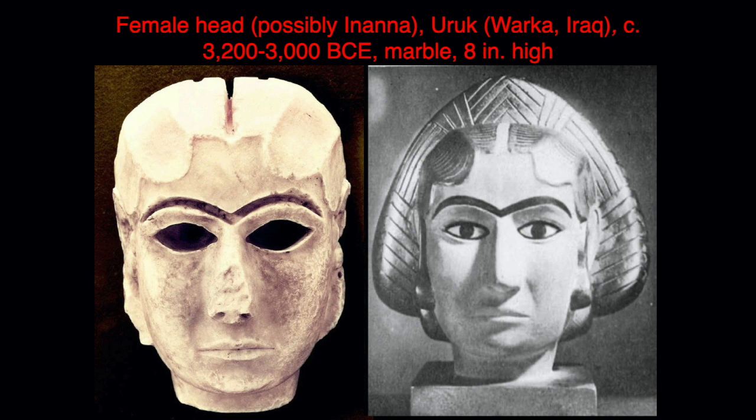The Warka Head may have been attached to a wooden body — we think this because there are holes at the base of the neck. The head is life-sized and would have been inlaid with eyes and eyebrows, painted, and possibly wore a wig made of gold. There are holes around the ears and temples believed to have secured the wig. The back side of the stone is rough and unfinished, which also suggests something was covering it — another reason to think there was a wig.